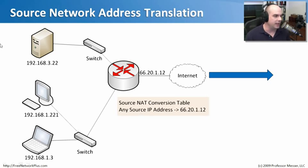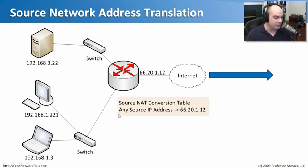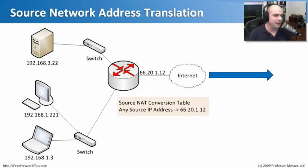Visually, source network address translation means all devices on your network communicate out to the internet but all look like they're coming from the single address, for example 66.20.1.12. Your router has a source NAT conversion table — you may not even see it, but it's there. It knows that if it receives any source IP address on the inside of the router, just convert all those IP addresses so the source looks like it's coming from that one external address. When something responds back, it responds to that single external IP address, and your router converts it back to the internal device.